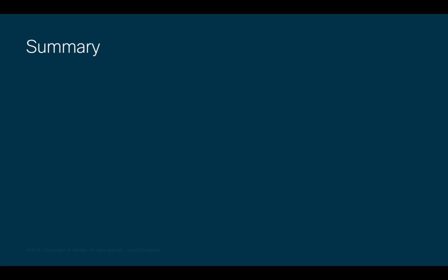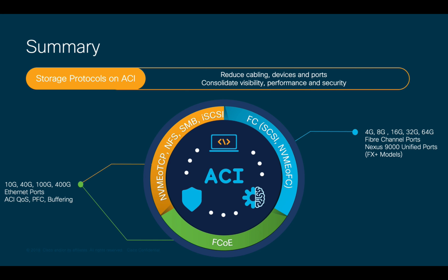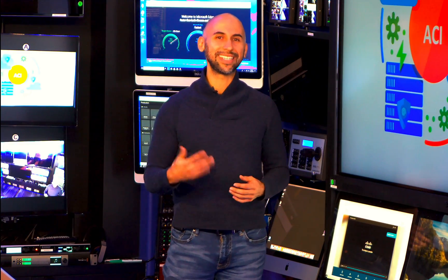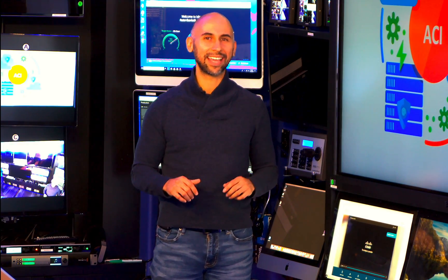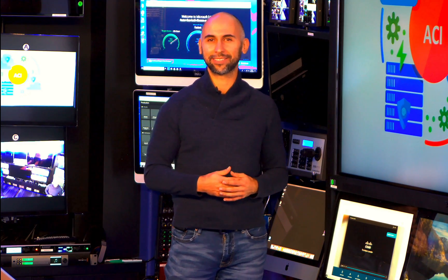As a summary, you can integrate Fiber Channel, FCoE, iSCSI, and many other types of storage networks directly on ACI, consolidating visibility and reducing the number of ports and devices you would otherwise need. Make sure you have the storage protocol's license to run native Fiber Channel and FCoE, and the right switch model supporting unified ports, such as the Nexus 9000 FX series. ACI provides you with a better, simpler, and secure network — any size, anywhere, and on any cloud. If you want to learn more, please watch the rest of the videos in this series. Thanks for watching.